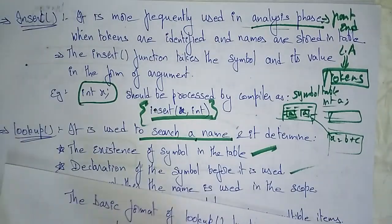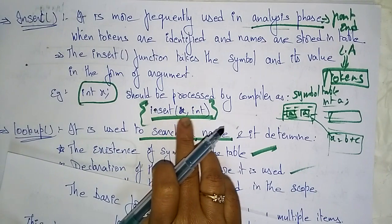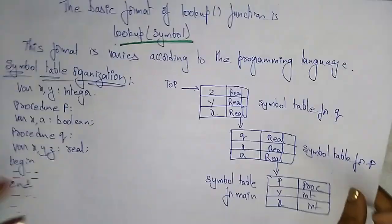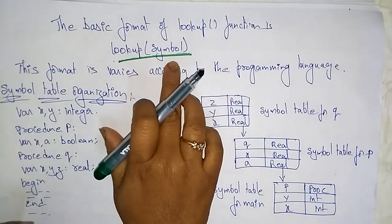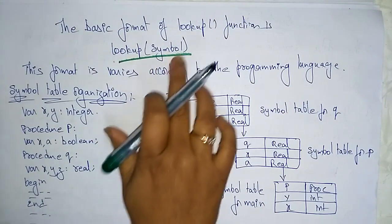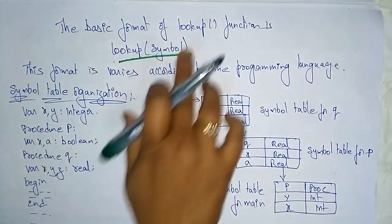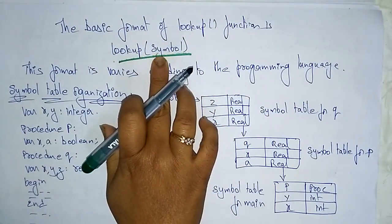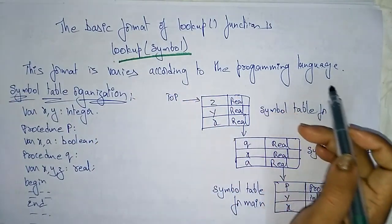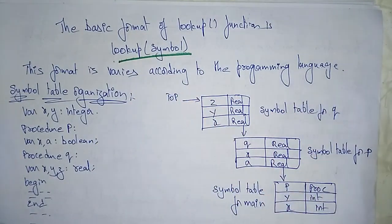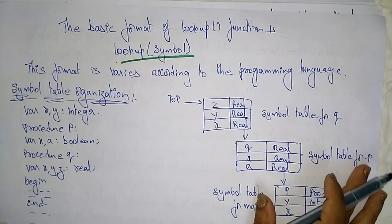The basic format of the lookup function is lookup(symbol), whereas insertion is like insert(variable, data_type). The lookup format varies according to the programming language, so different programming languages will use different lookup formats.